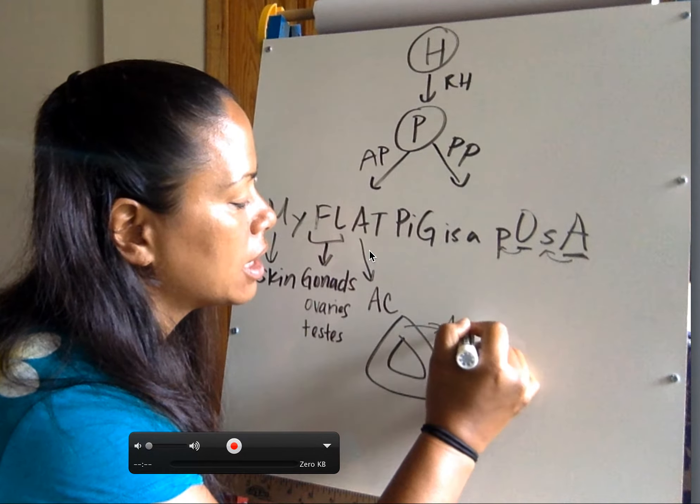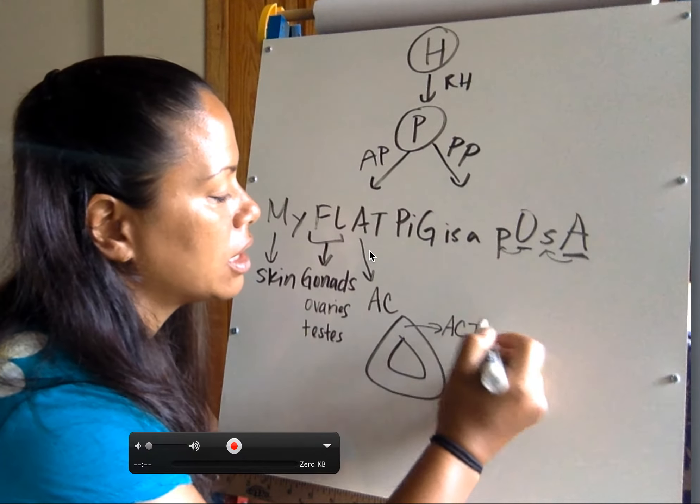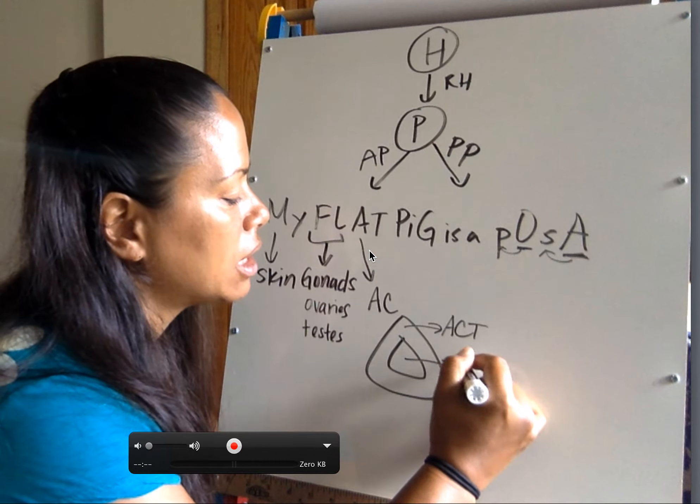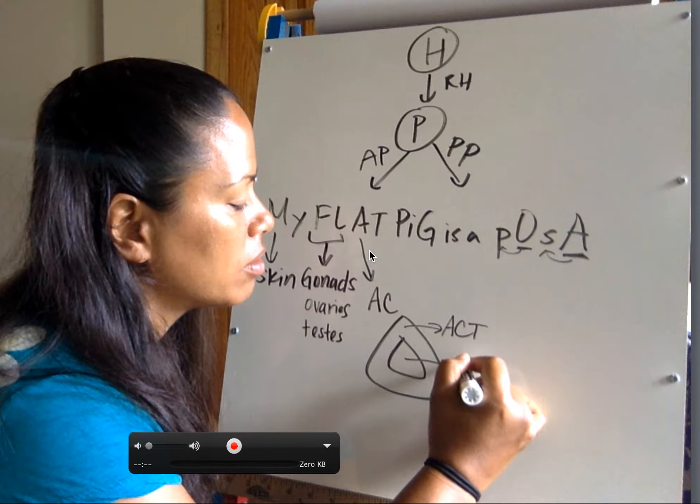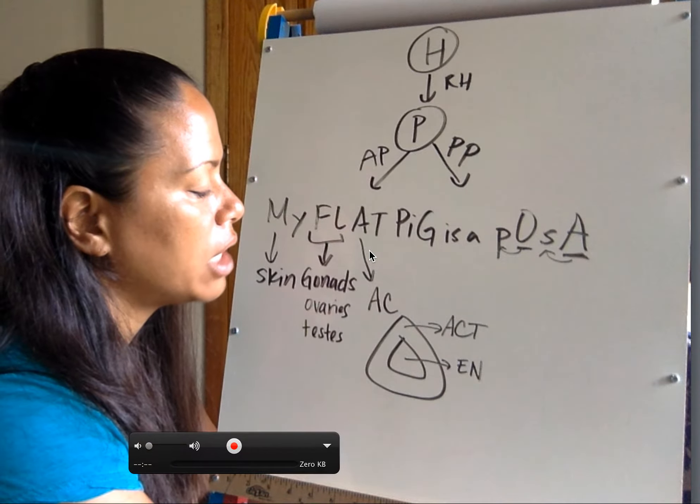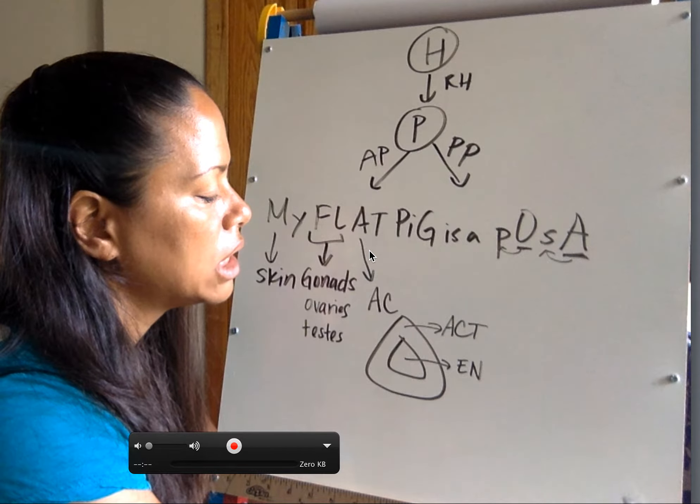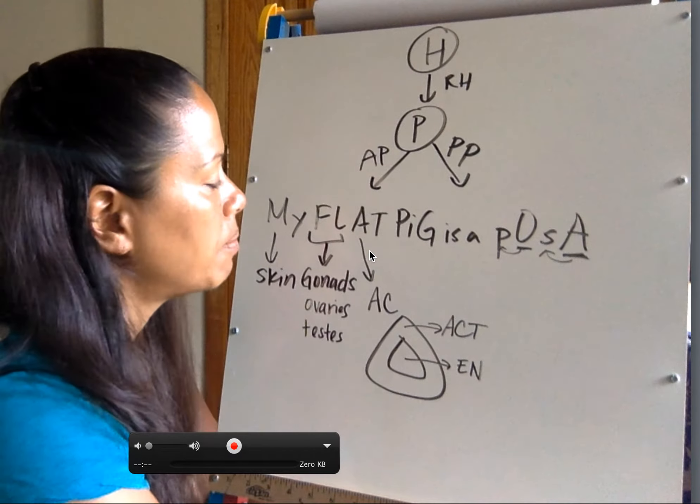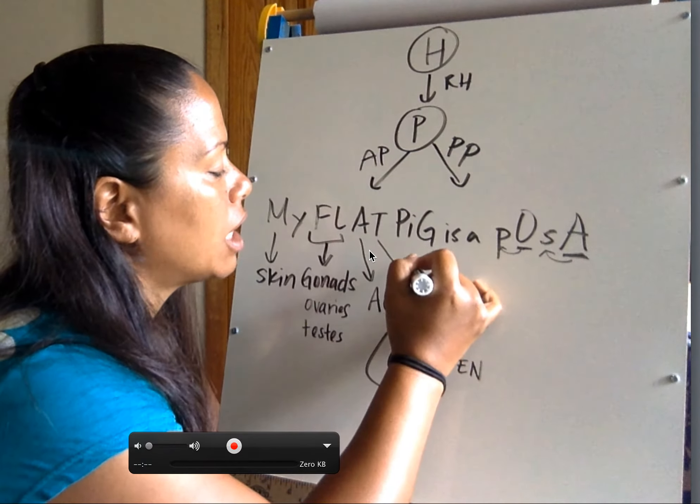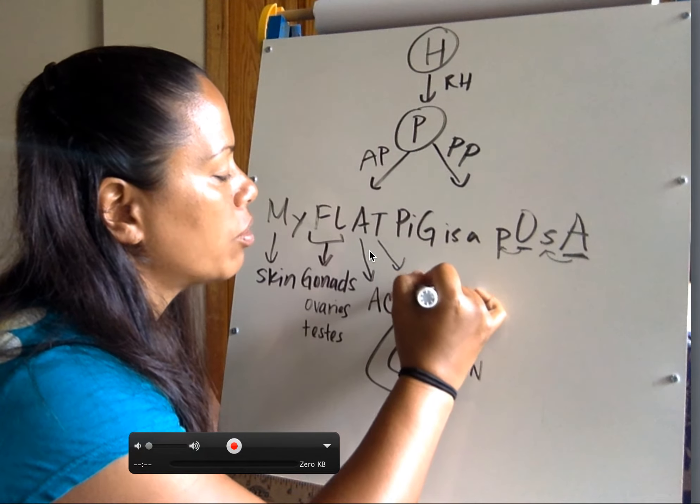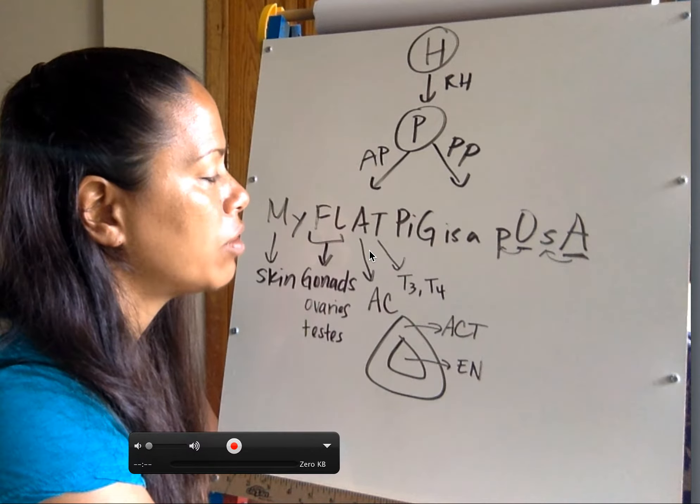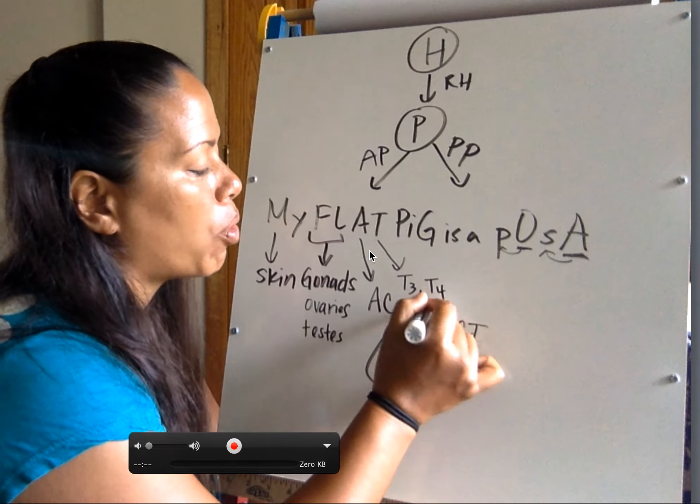The adrenal cortex releases some hormones. We'll discuss that in a bit. The adrenal medulla releases some neurotransmitters. And we should be able to get to that when we cover autonomic nervous system. TSH, thyroid stimulating hormone, acts on the thyroid gland to release T3 and T4. T4 has more, even though T3 is more potent. T4 has more.